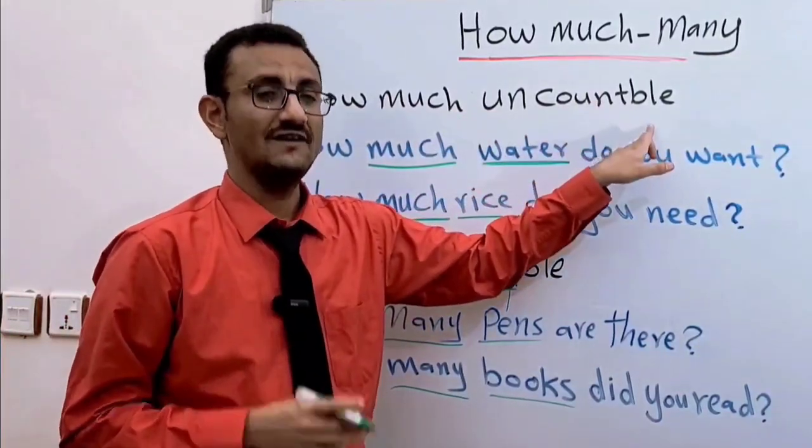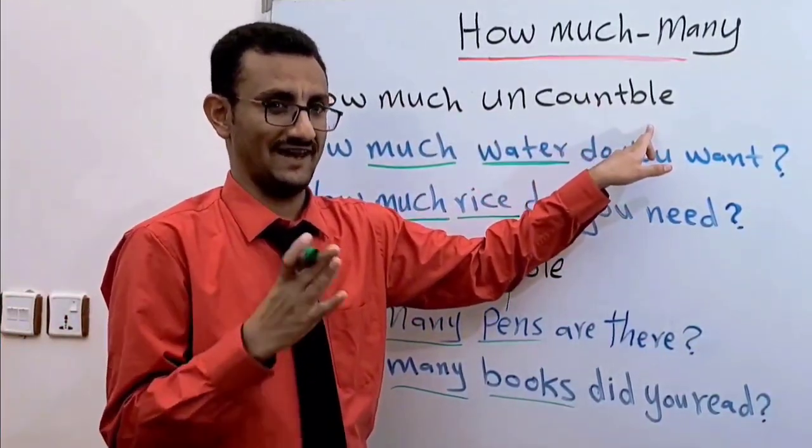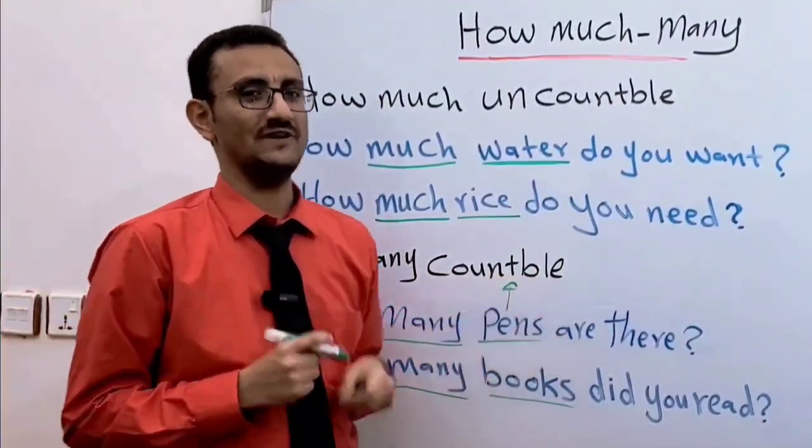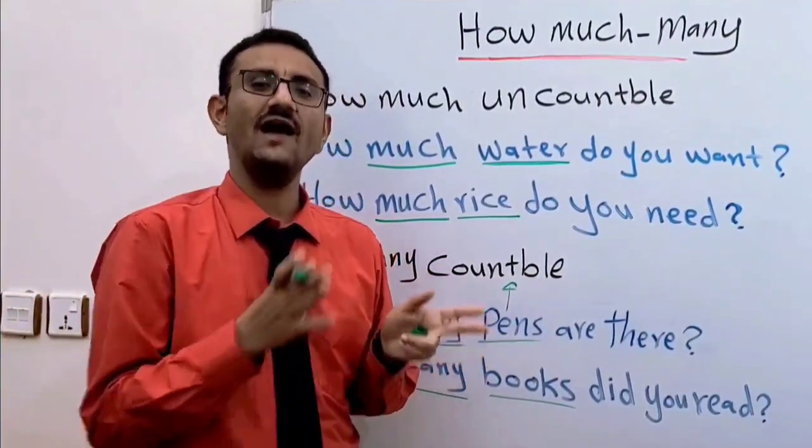'How much' is used for uncountable nouns - تستخدم مع الأسماء الغير معدودة. And 'how many' is used for countable nouns - أي مع الأسماء المعدودة.